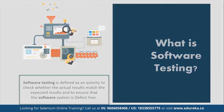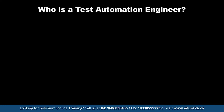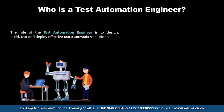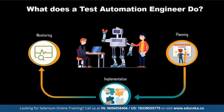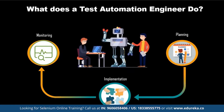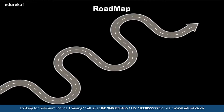Now that you know what software testing is, let's see who is a test automation engineer. The role of the test automation engineer is to design, build, test, and deploy effective test automation solutions. The automation engineer applies appropriate automation technologies to meet the short and long term goals of the testing organization. An automation engineer utilizes technology to improve, streamline, and automate a manufacturing process, and is responsible for planning, implementation, and monitoring of such technology.